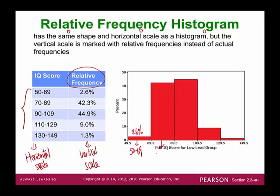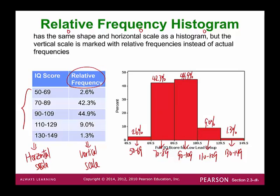The second class, 70 to 89, has a relative frequency of 42.3%. The third class, 90 to 109, has a relative frequency of 44.9%. The fourth class, 110 to 129, has a relative frequency of 9.0%. The last class, 130 to 149, has a relative frequency of 1.3%. We're just converting the relative frequency table back to the relative frequency histogram.